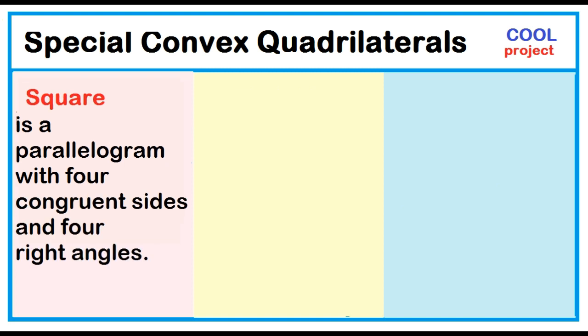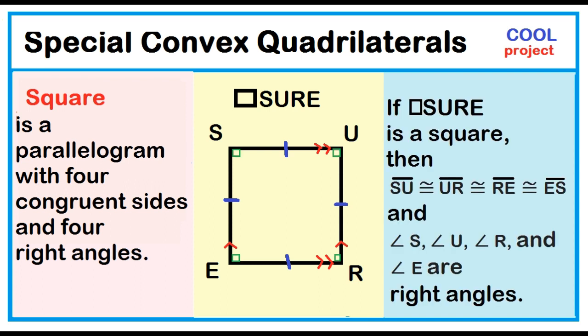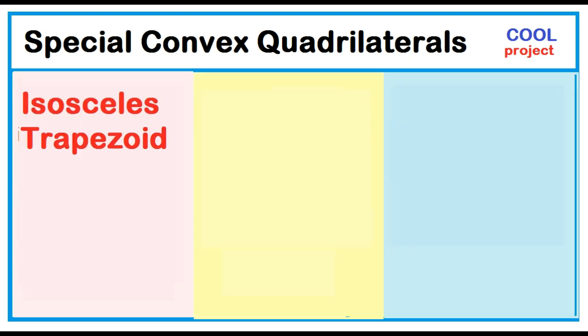A square is a parallelogram with four congruent sides and four right angles. Quadrilateral SURE has two pairs of opposite sides parallel, four congruent sides, and four right angles. If quadrilateral SURE is a square, then segment SU is congruent to segment UR, segment RE, and segment ES, and angle S, angle U, angle R, and angle E are all right angles.